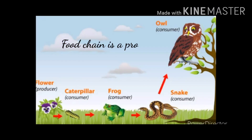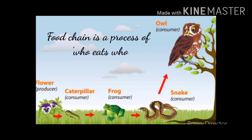Dear children, a food chain is a process of who eats whom. For example, flowers are eaten by a caterpillar, the caterpillar is eaten by a frog, the frog is eaten by a snake, and the snake is consumed by an owl. That is one food chain. Let's study the food chain in more detail and find out how each living organism gets its food.